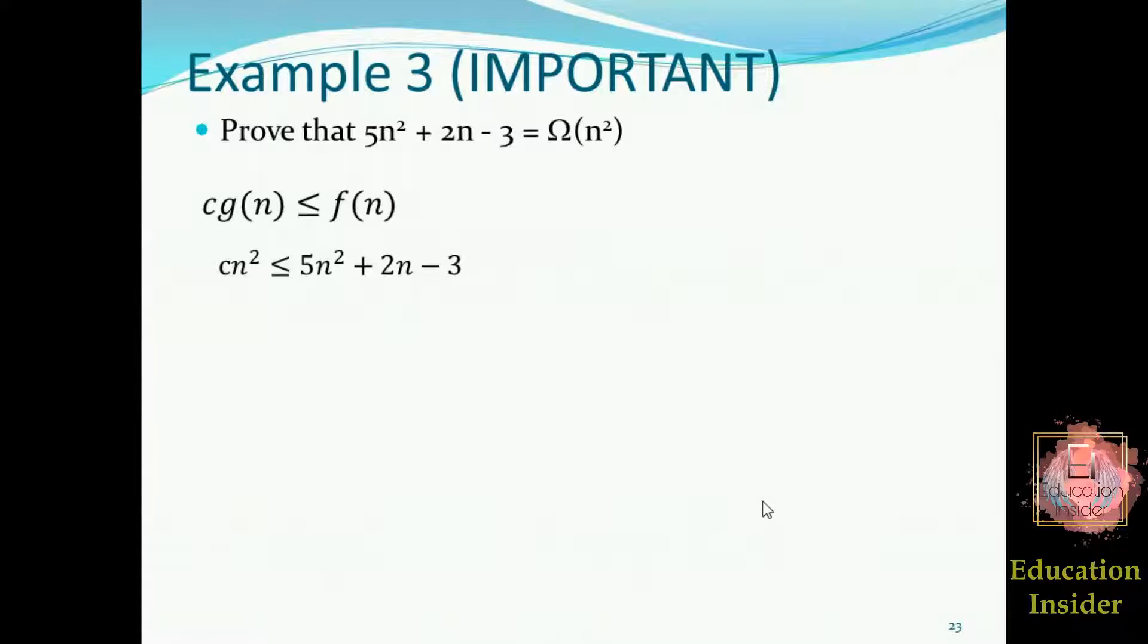So first of all, we need to assume the inequality and then populate the values of f(n) and g(n). Till now I have explained this method in Big O notation. In this Big Omega topic I will be finding out n value in a little bit different way, so listen carefully. As we need to prove that this cn square must be lesser than this 5n square plus 2n minus 3.